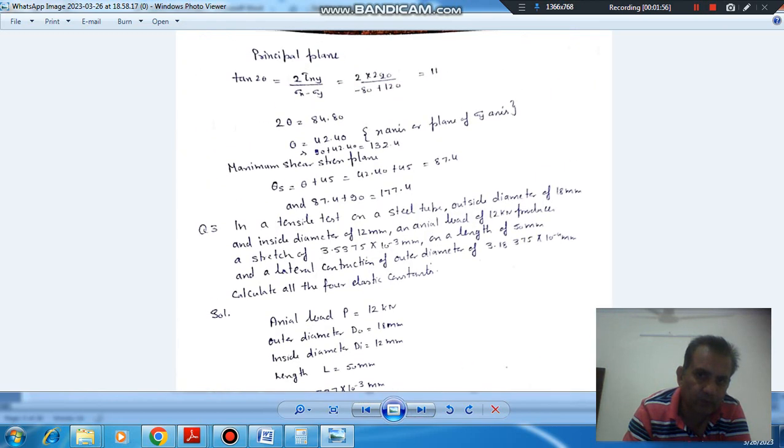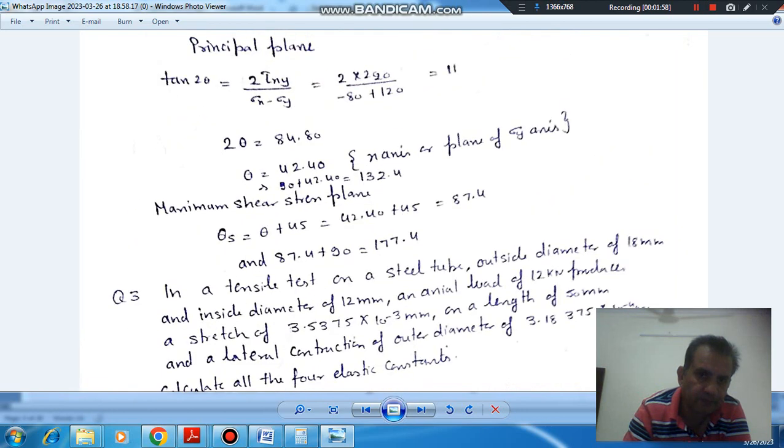Now to find the location of this principal plane, we have 2.20 MPa equals 2 Tau XY divided by Sigma X minus Sigma Y. Sigma X is minus 80 and Sigma Y is minus 120. Tau XY we have found is 119.08. So theta comes out as 42.2 degrees. It is with the X axis on the plane of Sigma Y. And the other plane is just adding 90 to it. So that is the location of the principal plane.